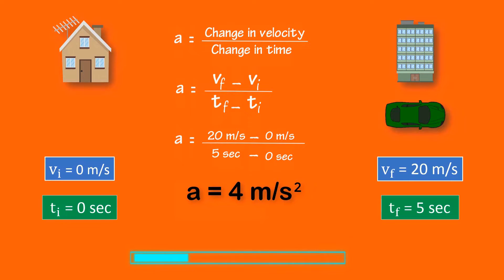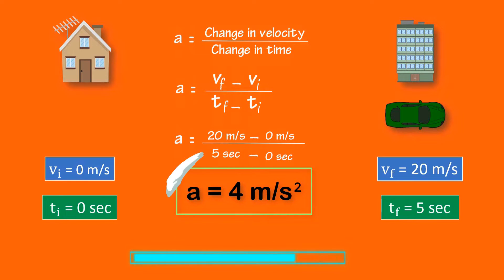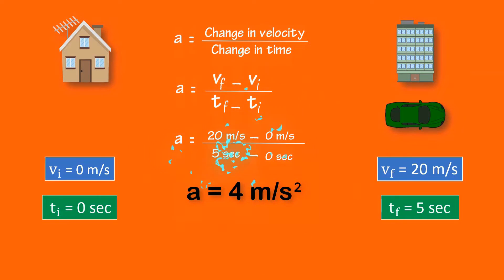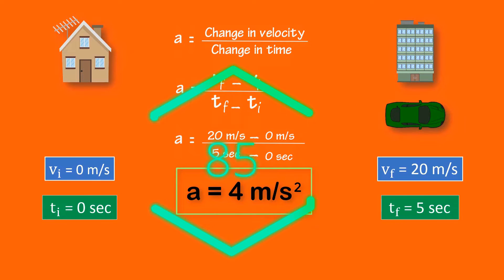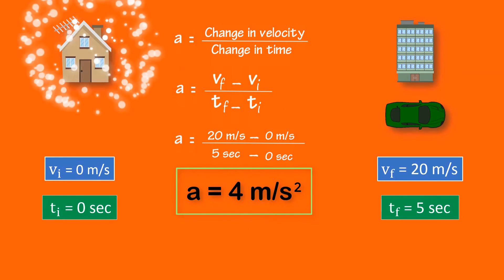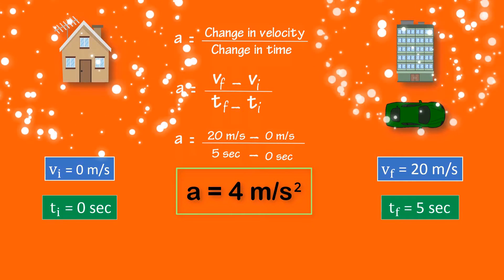Now, what is meant by 4 meters per second squared? Do you know its meaning? 4 meters per second squared means that the velocity of your car increased by 4 meters per second every second between your home and the city.